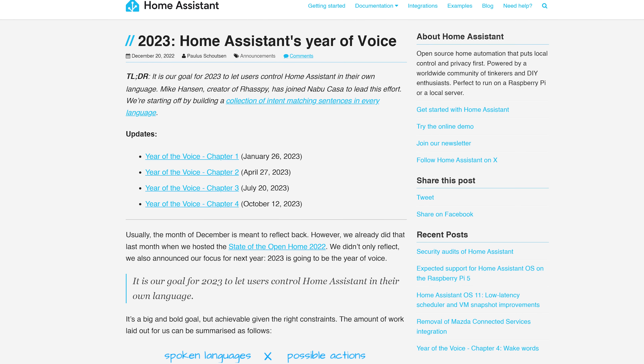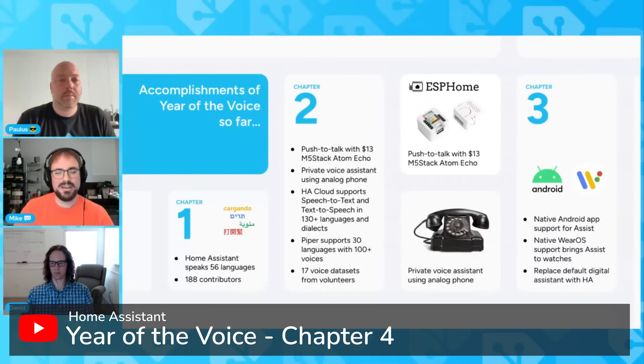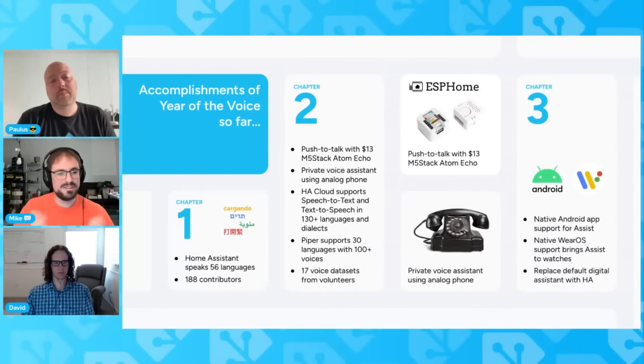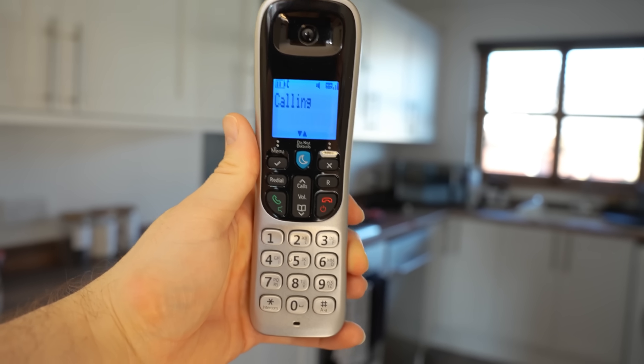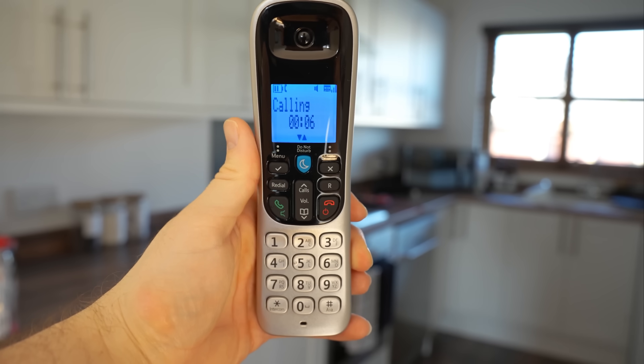Earlier this year Home Assistant embarked on what they were calling Year of the Voice, where they basically focused a lot of their efforts on adding a Voice Assistant to Home Assistant - much in the way you can interact with Amazon or Google Home using your voice - except this time there was a focus on it working locally and also a heavy focus on privacy. We've seen the Voice features develop over the course of this year: first we were able to input text to control a device, then use analog phones to talk to Assist, then we got push-to-talk on ESPHome devices, and now this chapter allows us to use Wake Words. Using Wake Words like 'OK Google' or Amazon's assistant name to trigger it is really important because it's not practical to press a button every time you want to talk to your house.